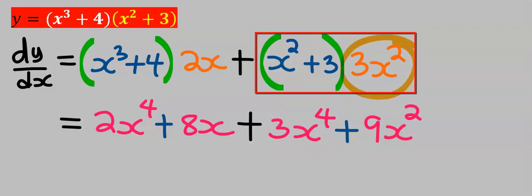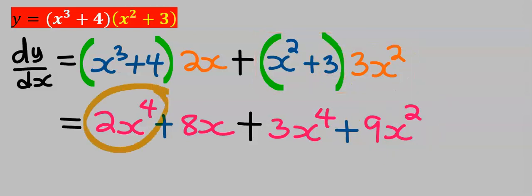Next, 3x squared multiply by 3, you are going to get 9x squared. Next, 2x to the power of 4...